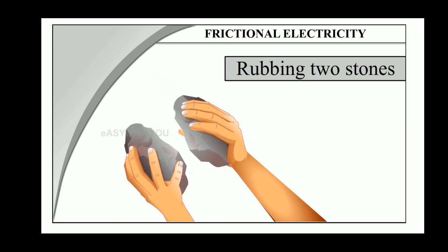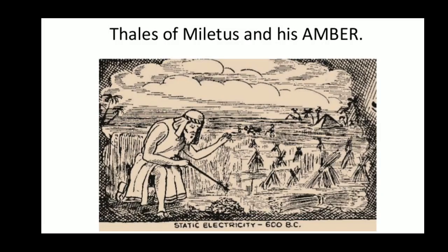Before going further, we have to study another concept called frictional electricity. Friction — you are all thorough with friction from your lower class. Due to relative motion between two objects, you get friction. When you rub two stones, you get some spark. So the same way, charges can also be produced.